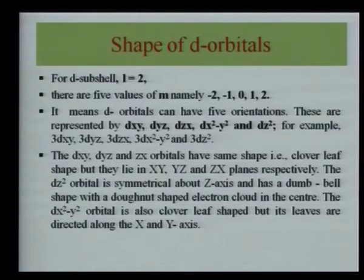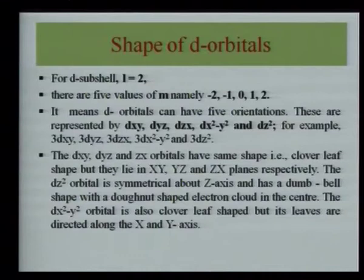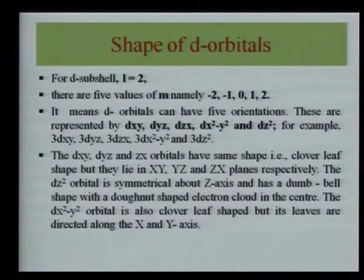For the D orbital, l = 2, and there are five values of m: −2, −1, 0, +1, +2. So D orbitals can have five orientations, represented as dxy, dyz, dzx, dx²−y², and dz². The dxy, dyz, and dzx orbitals have a clover leaf shape but lie in the xy, xz, and yz planes respectively.